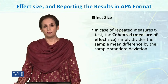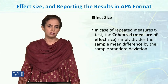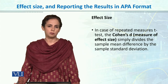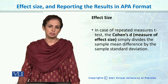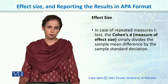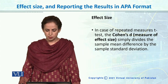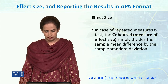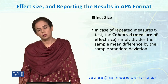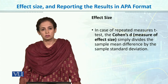So, as we did effect size and reporting of the results as per APA for the independent sample t-test, similarly we're going to do it for paired sample or repeated measures design. To report effect size, we will be using Cohen's D.